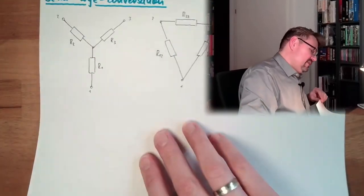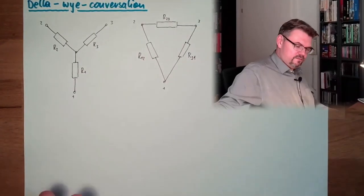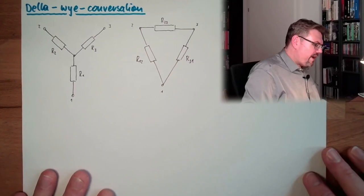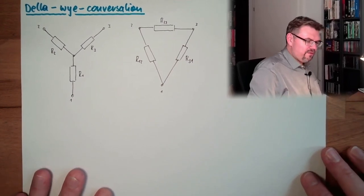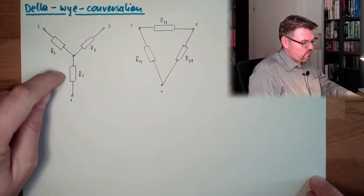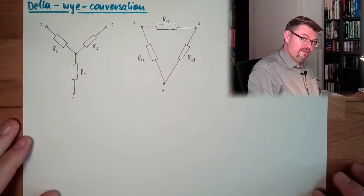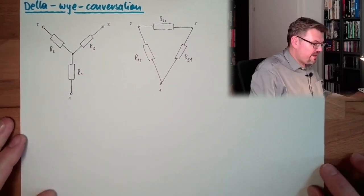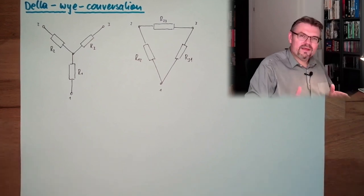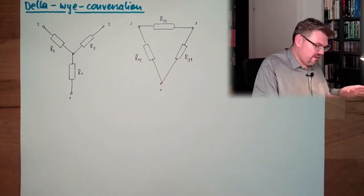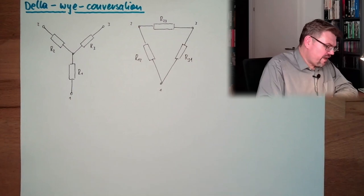Why is something called delta and why something is called Y? This is a Y, this is a delta, because it looks like a Y and this looks like a delta. And if it's delta-Y, why delta? I will talk about both. I have to give a name and that's it.